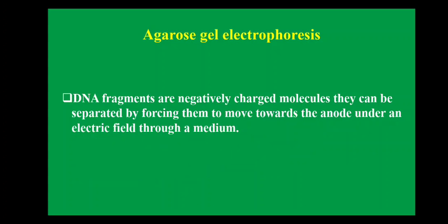DNA fragments are negatively charged molecules. They can be separated by forcing them to move toward the anode under an electric field through a medium. Since DNA is negatively charged, any negatively charged ion will always move to a positively charged electrode. The positively charged electrode is called the anode, and our negatively charged DNA moves toward it.